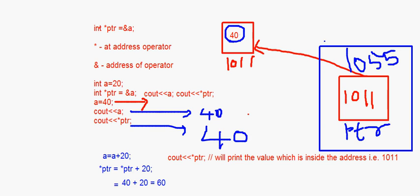This is how we use pointer variables to access and modify normal variables. We will be doing more on pointers — covering pointer arithmetic, predicting output with pointers, and using pointers with arrays. That's all for today's session. Bye.